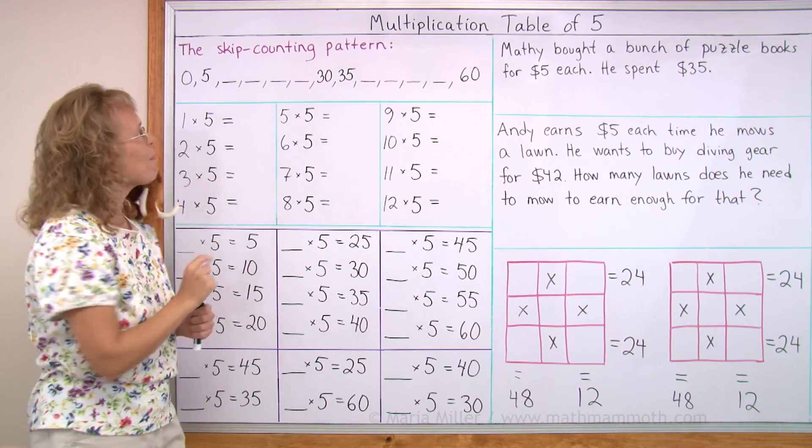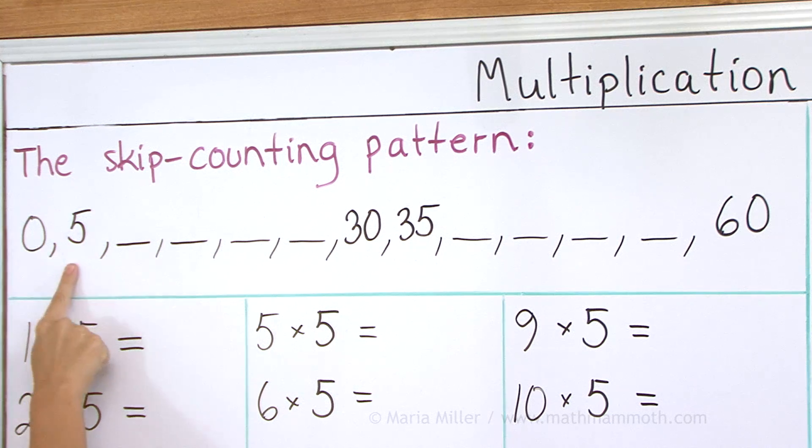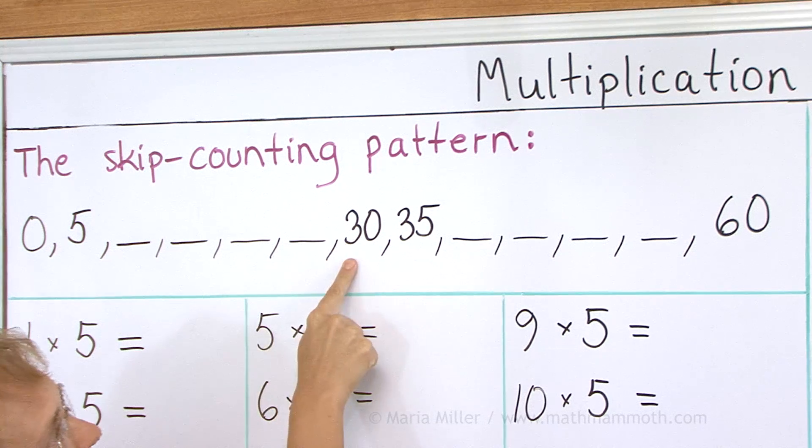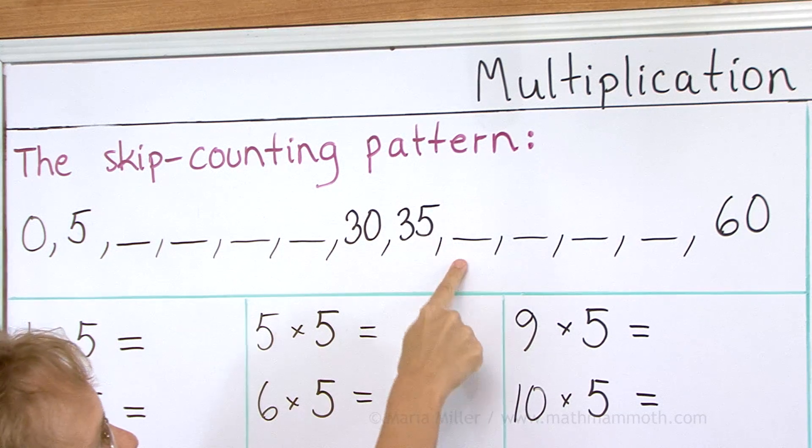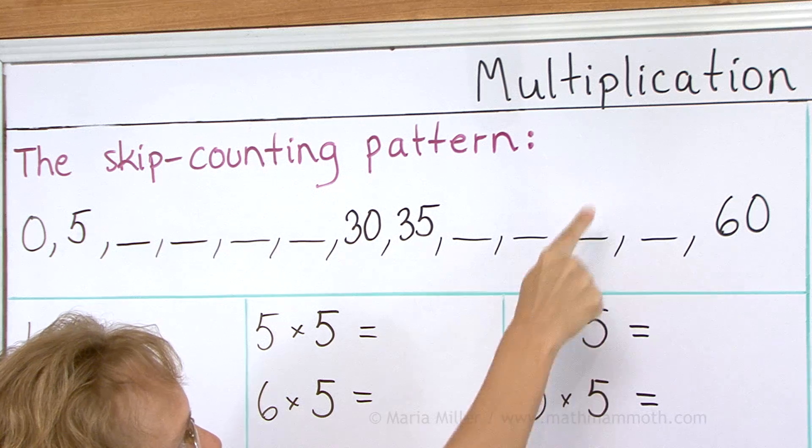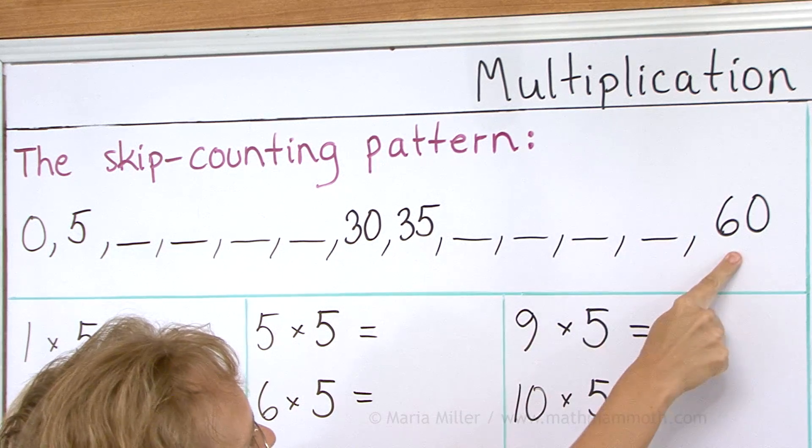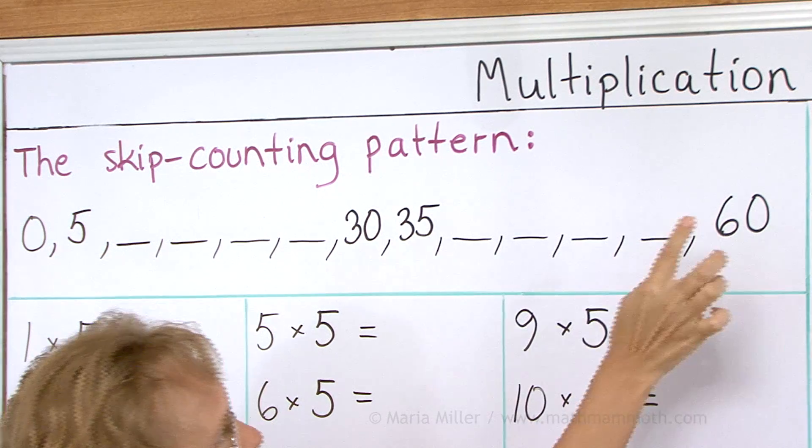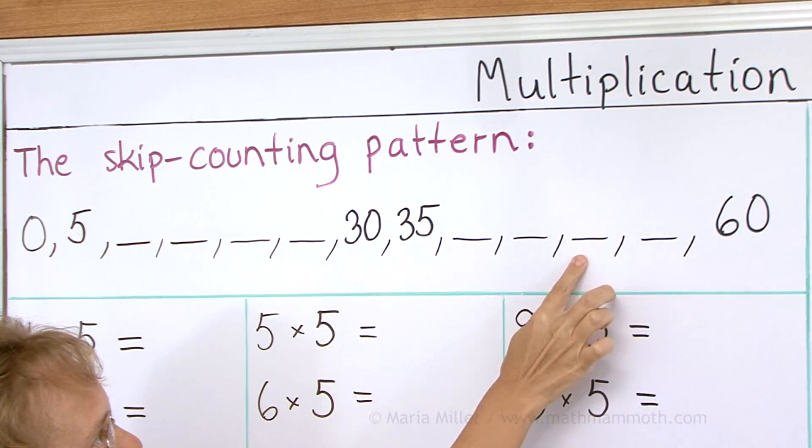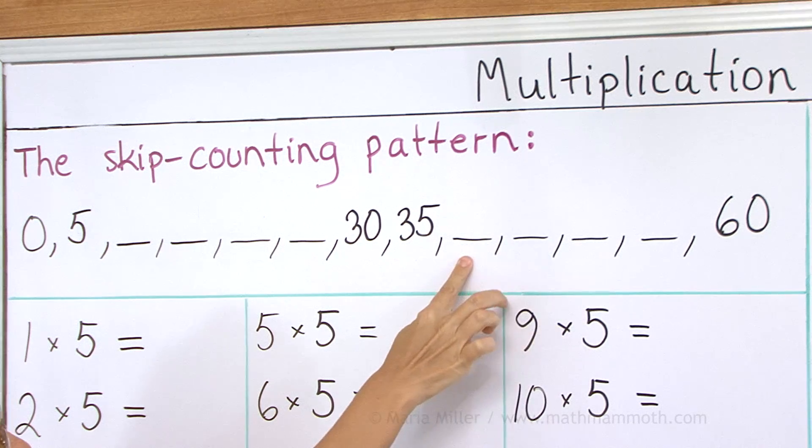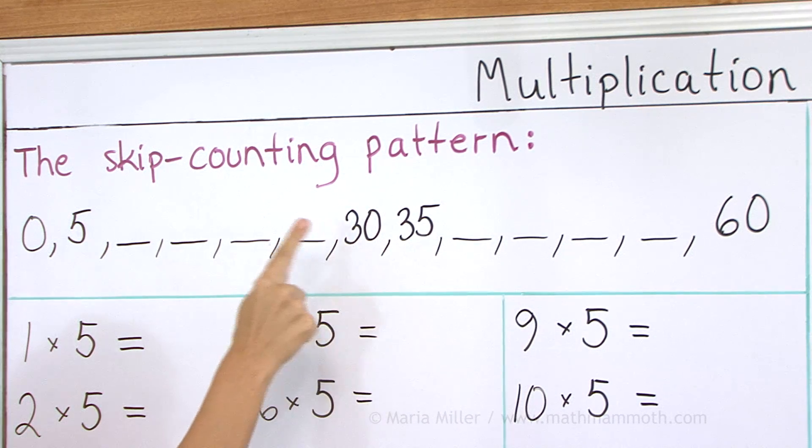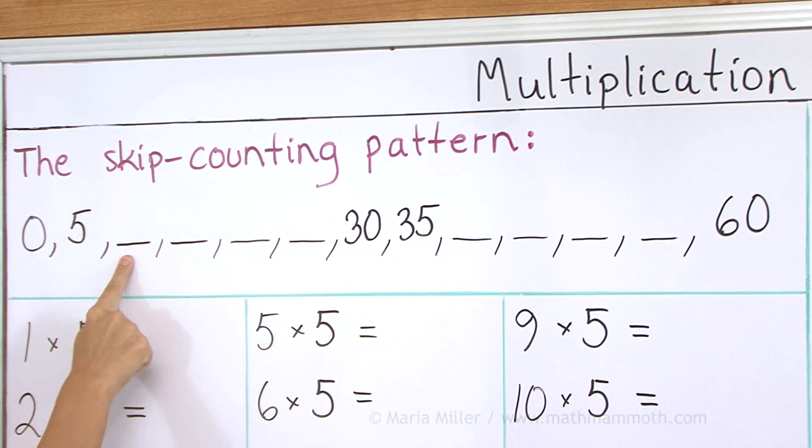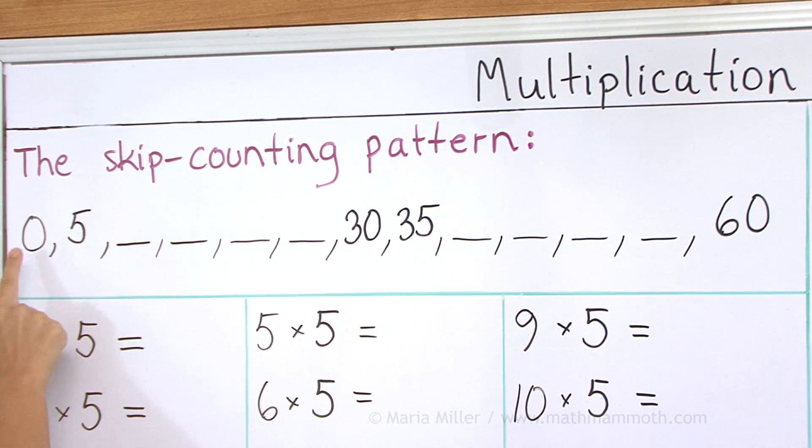Okay, now you say it. And now you say it backwards, okay? Starting with 60, 55, 50, 45, 40, 35, 30, 25, 20, 15, 10, 5, and 0.